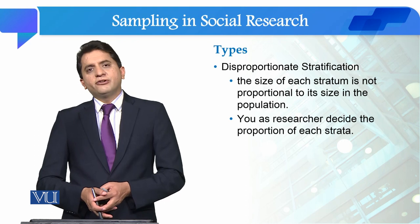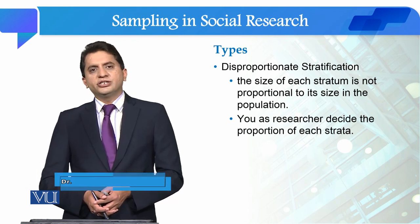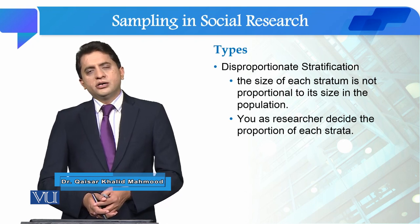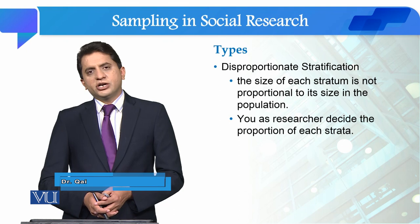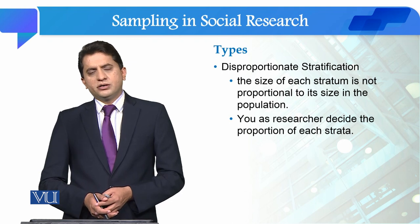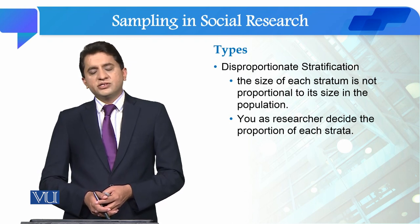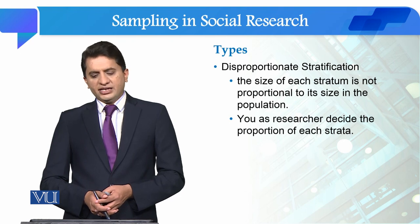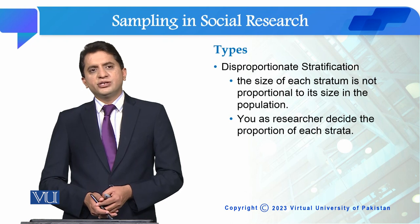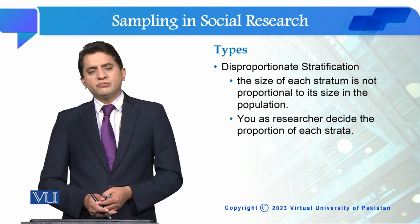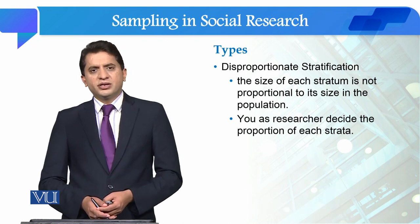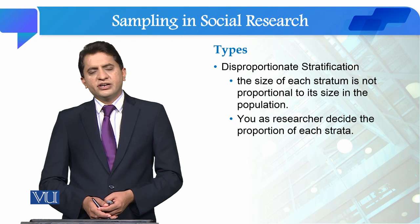The second type is disproportionate stratified sampling. In this type, we do not allocate the sample to each stratum on the basis of proportional allocation. The size of each stratum is not proportional to its size in the population. Instead, you as a researcher decide the proportion of each stratum — which stratum gets more representation and which gets less in the sample.